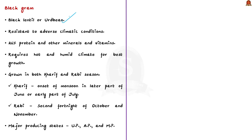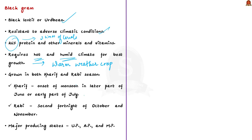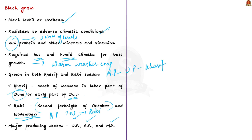Black gram is also known as black lentil or uradbeen. It is one of the important pulses grown throughout the country. It is resistant to adverse climatic conditions and contains about 26% protein, almost three times that of cereals. It also contains other minerals and vitamins. Black gram requires hot and humid climate as it is a warm weather crop. Importantly, it is grown in both kharif and rabi seasons. In kharif, sowing is done with the onset of monsoon in late June or early July. In rabi, it is sown in October–November. Major producing states are Uttar Pradesh, Andhra Pradesh, and Madhya Pradesh.